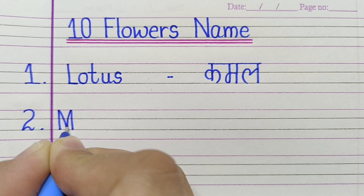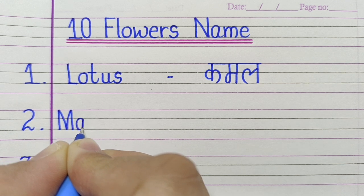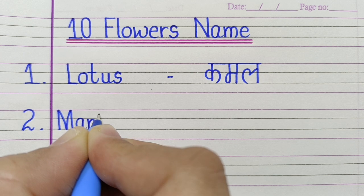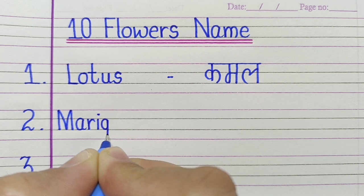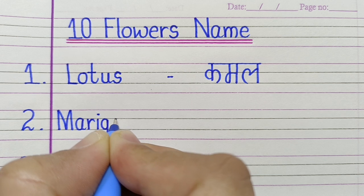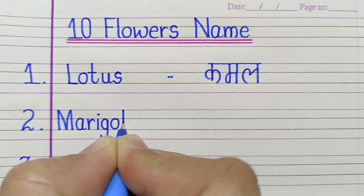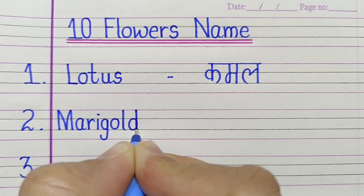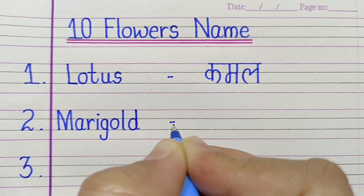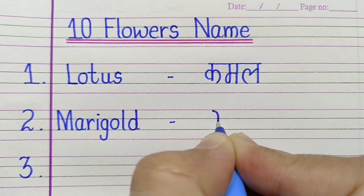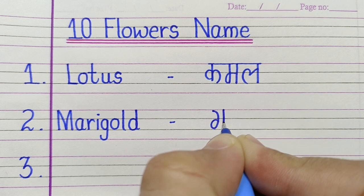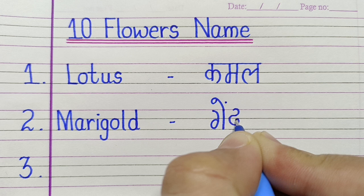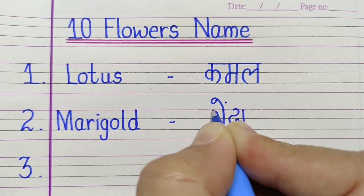M-A-R-I-G-O-L-D, Marigold. Marigold means Genda.